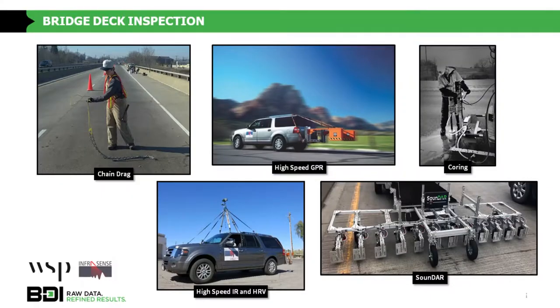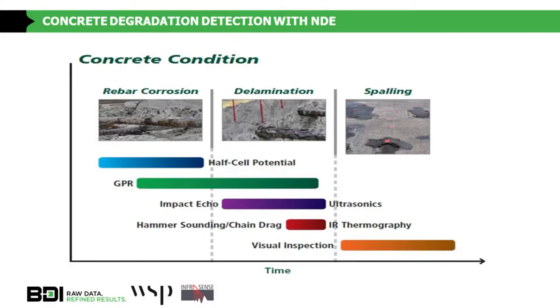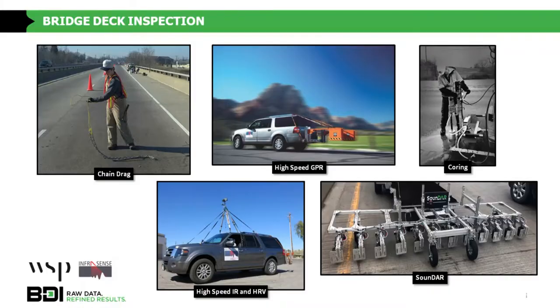What we're typically used to is just capturing degradation at the last phase during chain drag — that's kind of the golden standard. But what we're missing is all the different phases of rebar degradation, where we could use that data to actually plan when we want to preserve our assets. We can go through this whole phase without interrupting traffic by using high-speed GPR, infrared thermography, and high-resolution video. Now we have mobile sounding technologies as well. After that, if we want to do material sampling to get resolute data — chloride profiles and things like that — for condition assessment, we can.